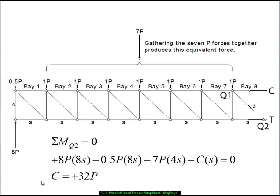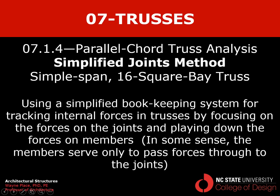We got a compressive force of 32P using the method of joints, and we've now confirmed it by taking this free body and applying the method of sections — where we slice a section through the truss and isolate a portion, as opposed to the method of joints where we isolate individual joints. That ends our first video on the simplified joints method as applied to a simple span 16 square bay truss, where we demonstrated a bookkeeping system that allows us to focus on the forces on joints and play down the forces on members, because the members mainly serve to pass forces through from joint to joint.